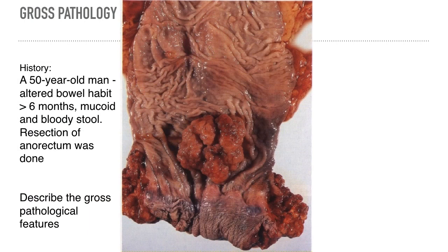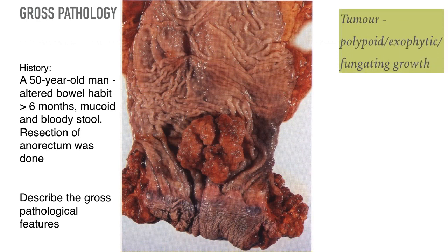This is a photograph from a 50-year-old man with altered bowel habit for more than 6 months, mucoid and bloody stool. This is a resection of the anorectum. As you can see, there is a tumor arising from the bowel mucosa, showing a polypoid or exophytic fungating growth, meaning the tumor arises from the mucosa towards the lumen.